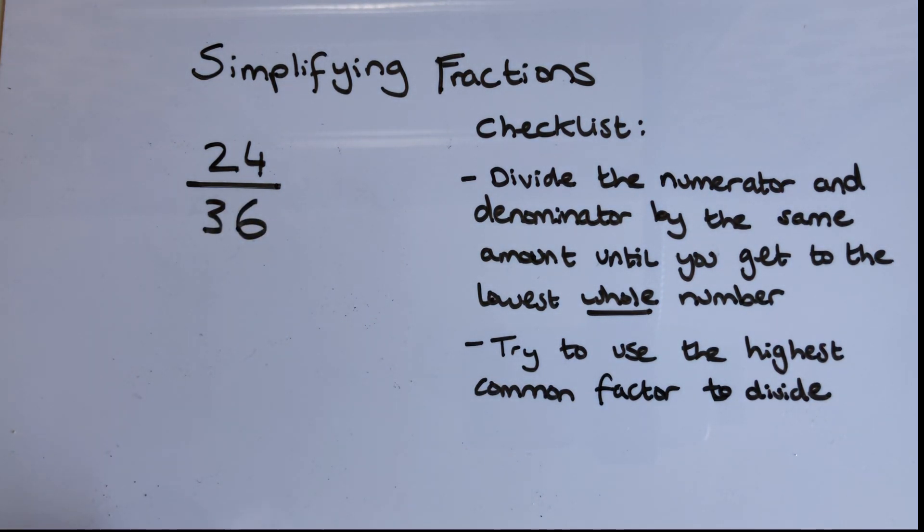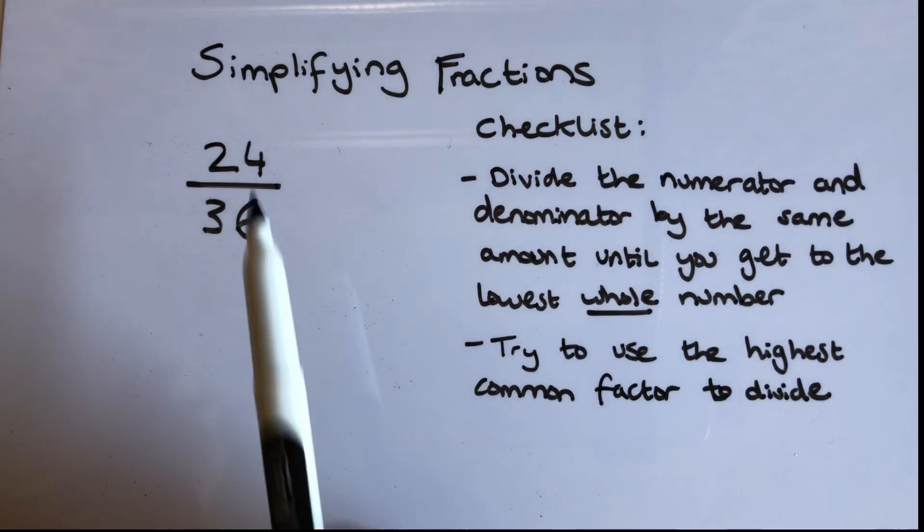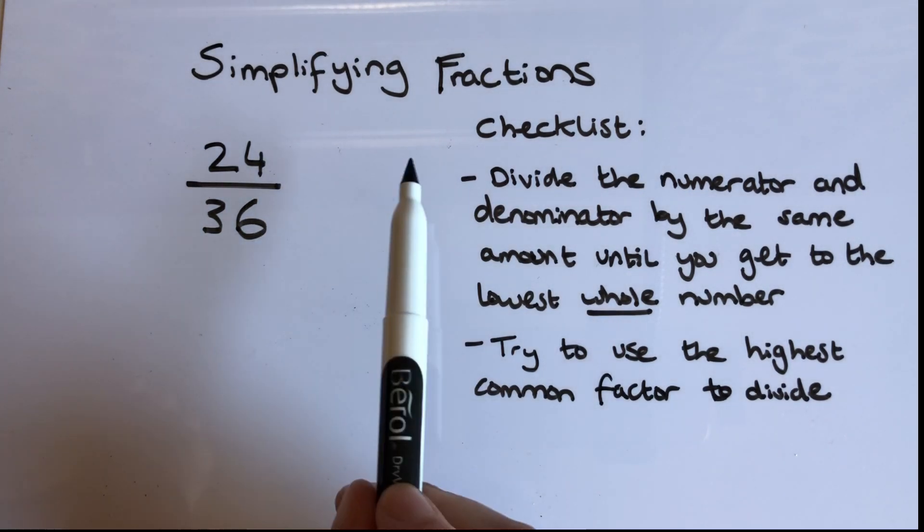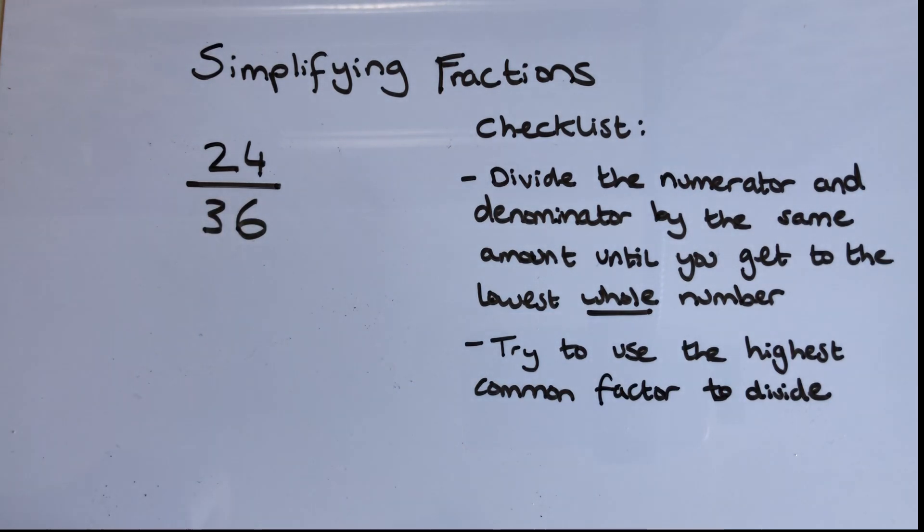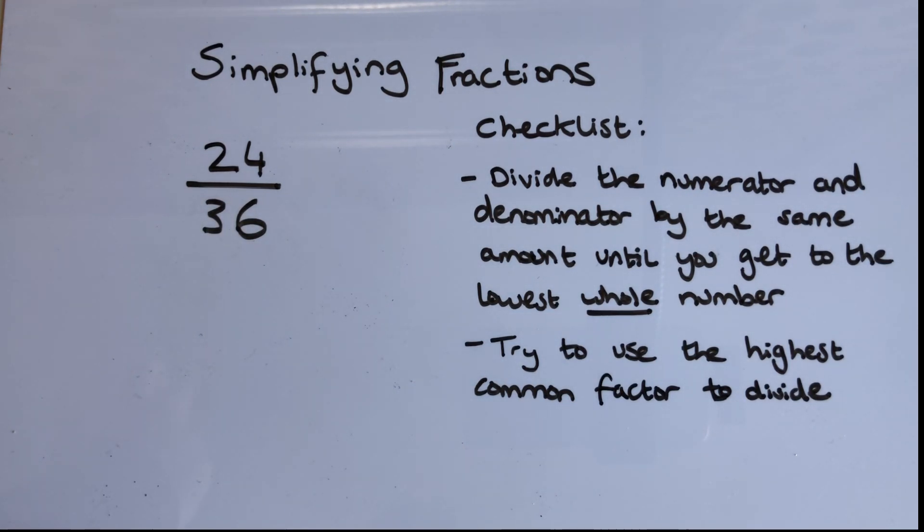So in this one the highest common factor is 12. 24 divided by 12 is 2, and 36 divided by 12 is 3. But if I don't know my 12 times table that well, I might not see that. So I can do what I already know.